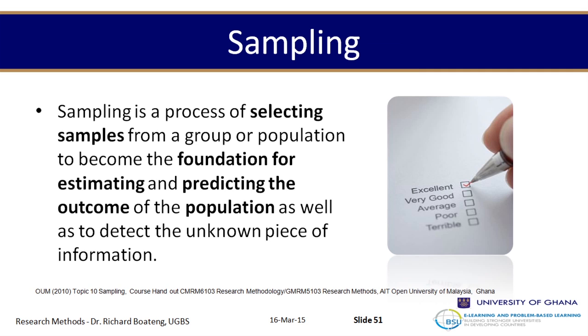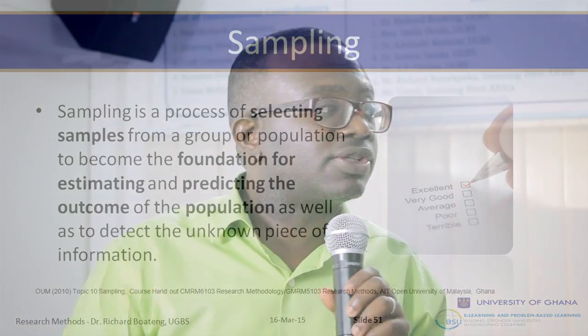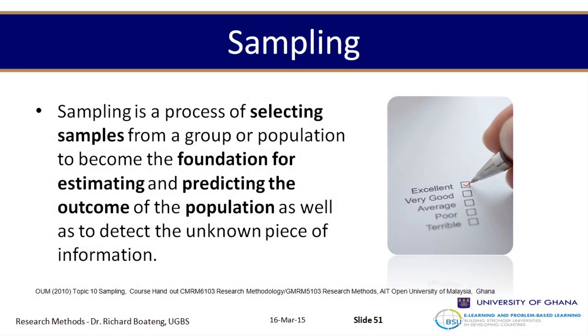Sampling is the process of selecting samples from a group or population. Whenever you do research, you're targeting a given population. For example, if you want to research market women in Accra, you can't interview every single one — you need to take a sample. A sample is the process of selecting elements from a population to become the foundation for estimating and predicting outcomes over that population.